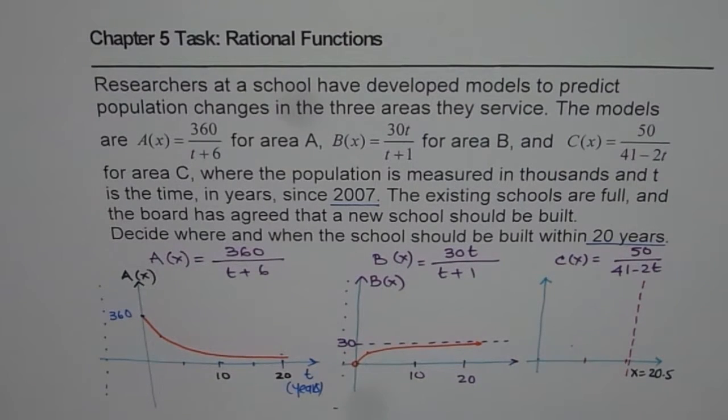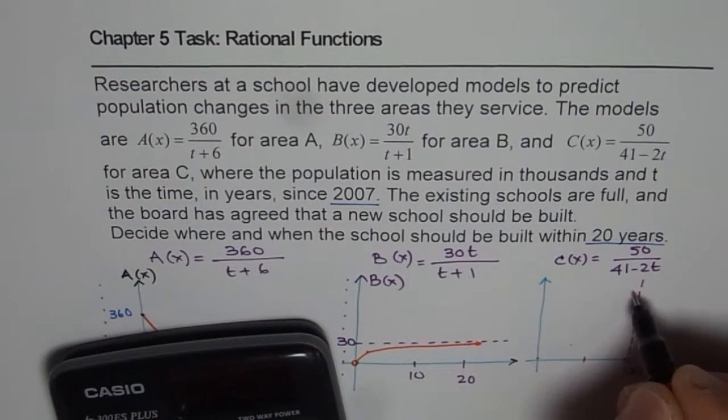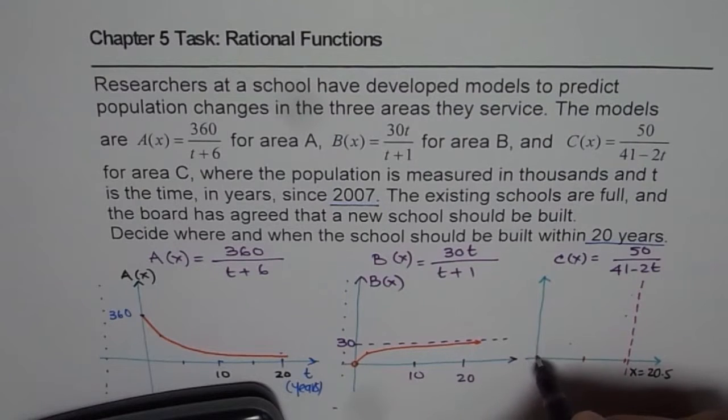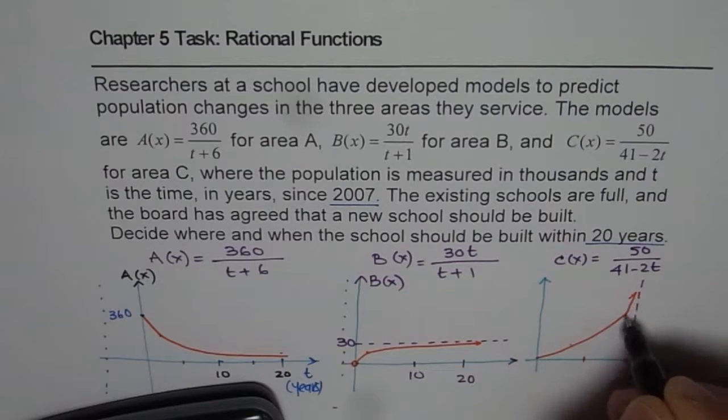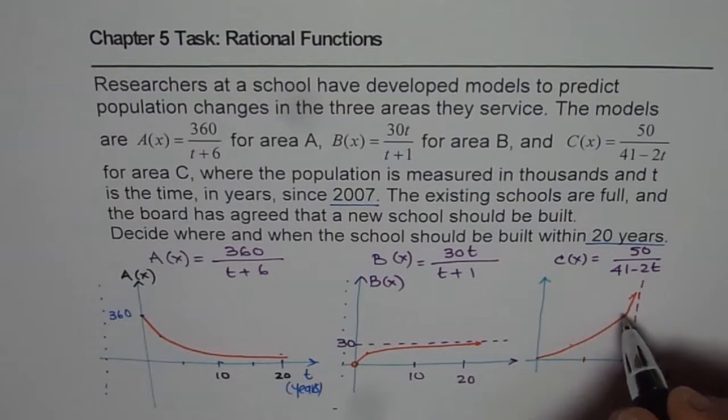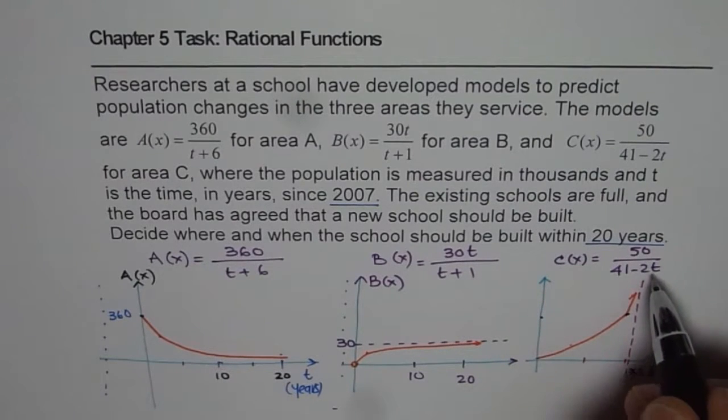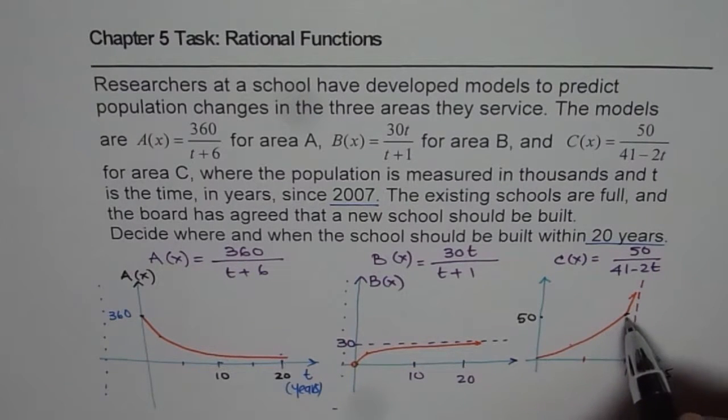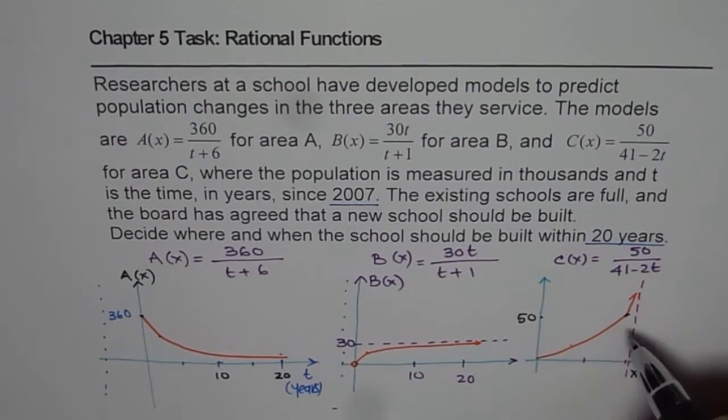So actually at 20, it will be 50, 50,000. So at 20, it is kind of 50. So let us say this is 50 for us. So the graph will be kind of like this, but thereafter it is going to increase very steeply. Do you see that? So what we notice here is in school area C, the rate of change is extremely high just after 20. And then it just explodes here.